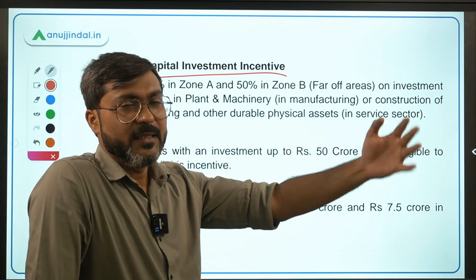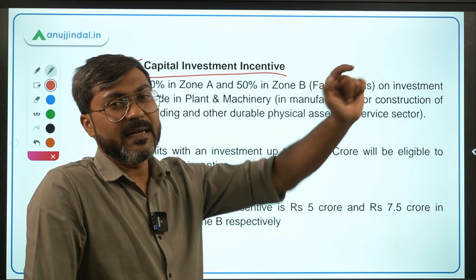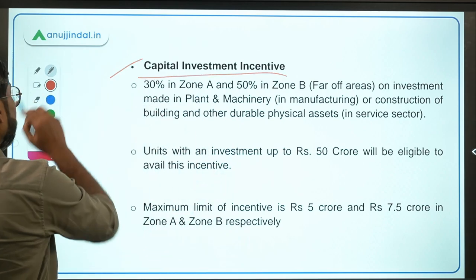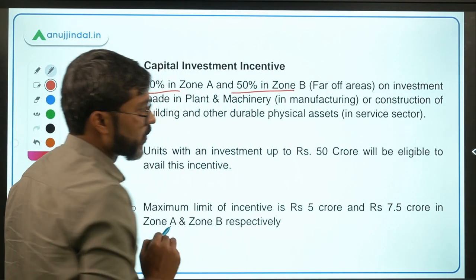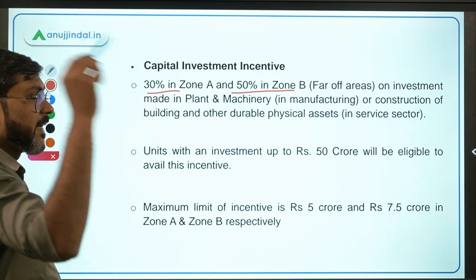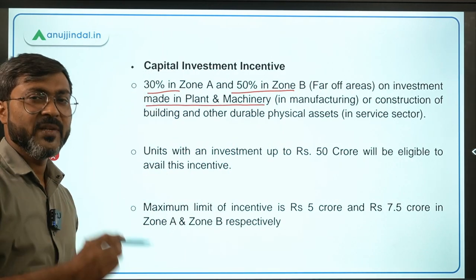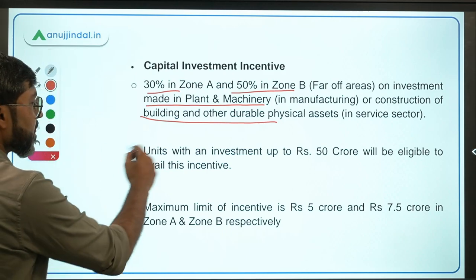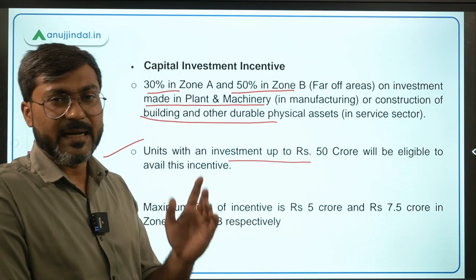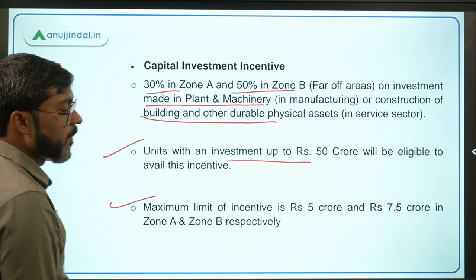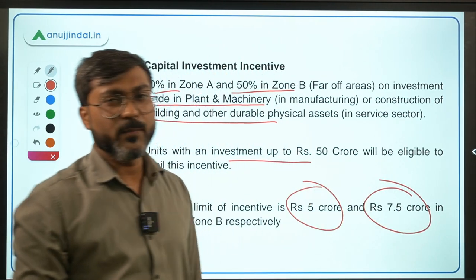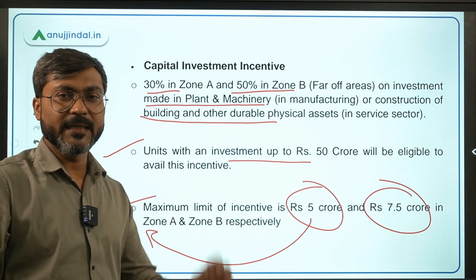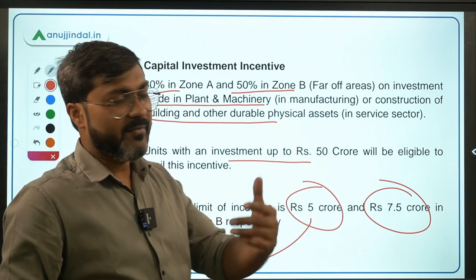Zone A covers nearby/accessible areas while Zone B covers hard-to-reach areas. The capital investment incentive is 30% in Zone A and 50% in Zone B, calculated on investment made in plant and machinery in the manufacturing sector, or construction of buildings and other durable physical assets in the service sector. Units with an investment of Rs. 50 crore are eligible. The maximum limit of incentive is Rs. 5 crore for Zone A and Rs. 7.5 crore for Zone B.